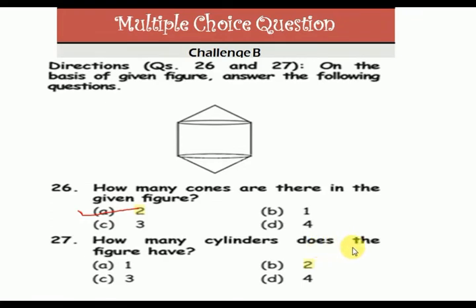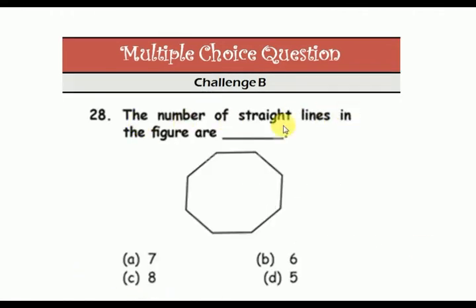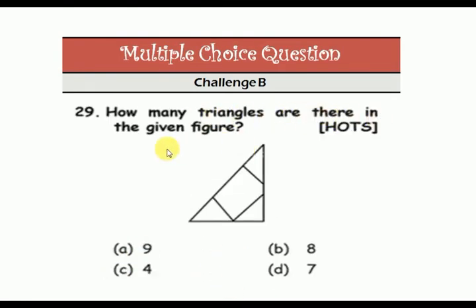Only one cylinder is here. The number of straight lines in the figure: one, two, three, four, five, six, seven, eight. How many triangles are there in the given figure? One, two, three, and four.